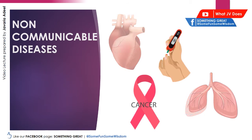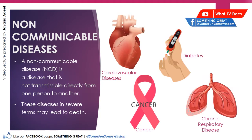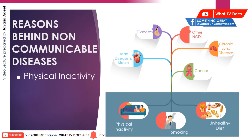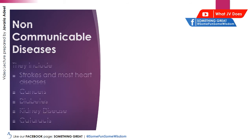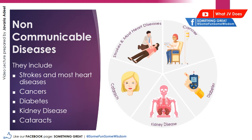Moving on towards the second type of disease: non-communicable diseases. Such diseases are not transmitted from one person to another directly, and in severe terms they may lead to death. Such diseases are caused by physical inactivity, smoking, or unhealthy diet and lifestyles. The most common types of non-communicable diseases are strokes and heart diseases. They also include cancers, diabetes, kidney diseases, and cataracts in the eye.